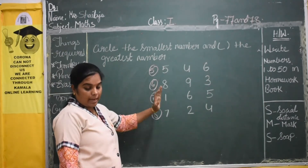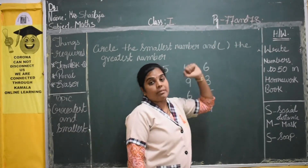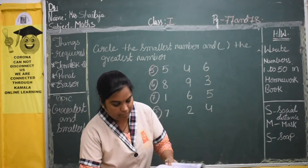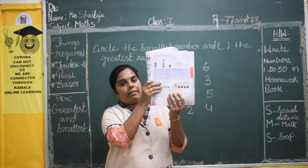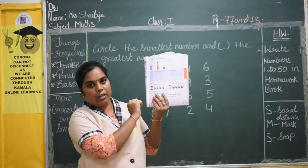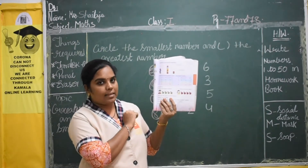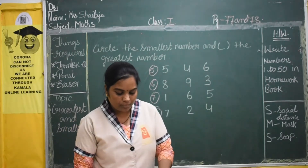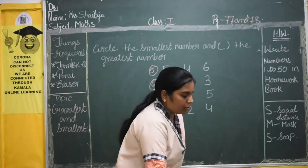So this side, page number 77. Page number 77. Last class we have completed this one. Now we are going to complete this one — that is 6, 7, 8. So now here we should complete.